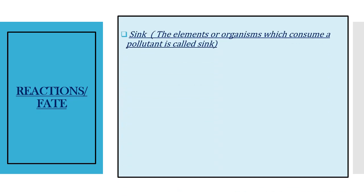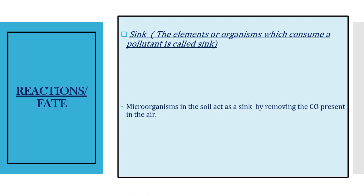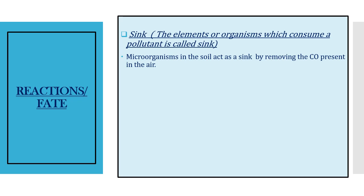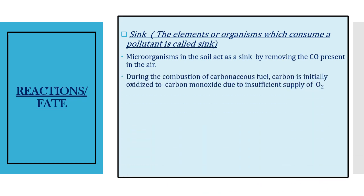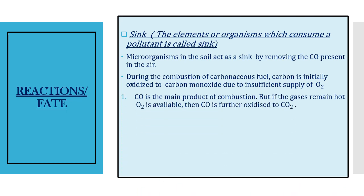We now proceed towards the reactions and the fate with respect to carbon monoxide. First, you need to understand what a sink is. The elements or organisms which consume a pollutant are called a sink. Microorganisms in the soil act as a sink and remove carbon monoxide present in the air. During combustion of carbonaceous fuel, carbon is initially oxidized to carbon monoxide due to insufficient supply of oxygen, so CO is the main product of combustion.